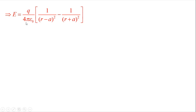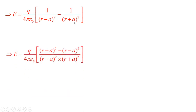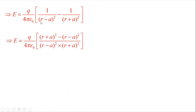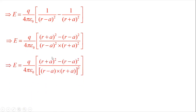Taking LCM, the denominator becomes (r − a)² × (r + a)², and the numerator becomes (r + a)² − (r − a)². This simplifies to [(r − a)(r + a)]² = (r² − a²)² in the denominator and 4ra in the numerator.